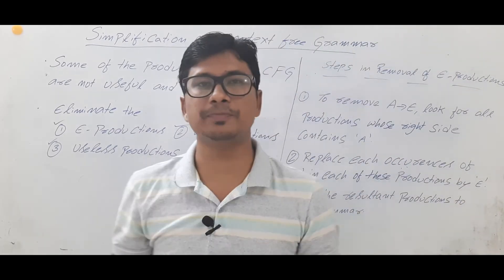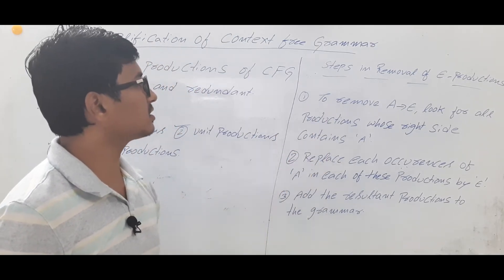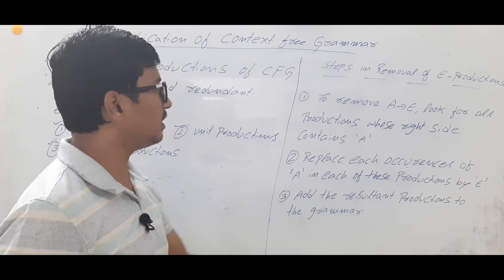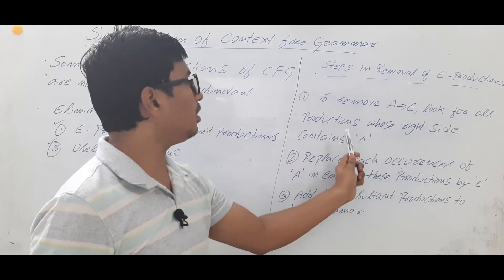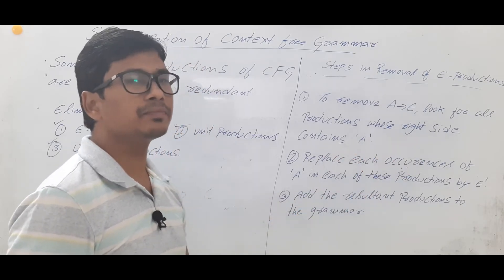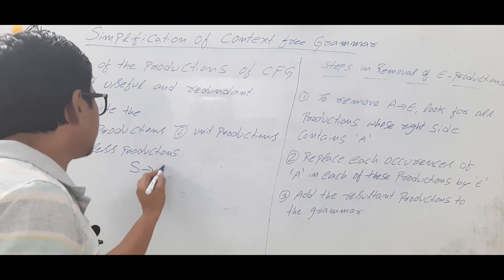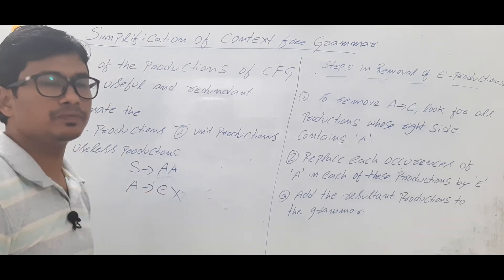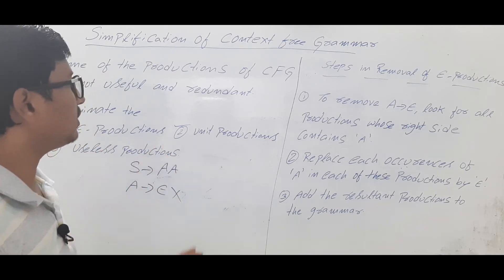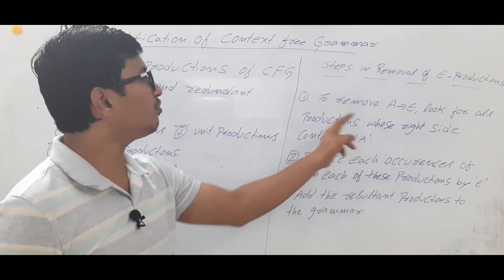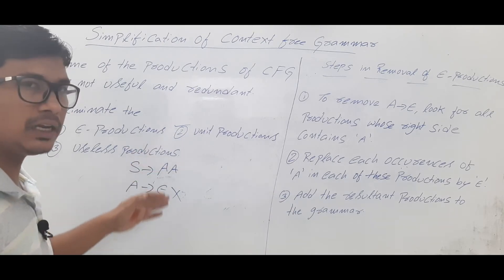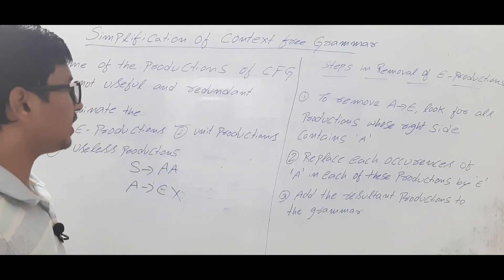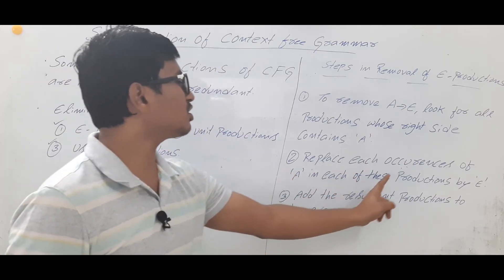Now let's discuss the steps to remove epsilon productions. To remove A determines epsilon, look for all productions whose right-hand side contains A. For example, if you have S determines AA and A determines epsilon, and your objective is to remove A determines epsilon, then in the entire set of productions you look for anywhere A appears on the right-hand side.